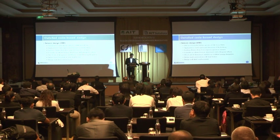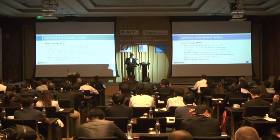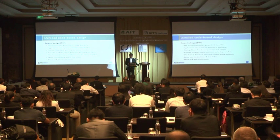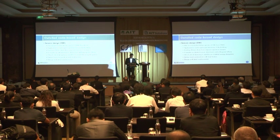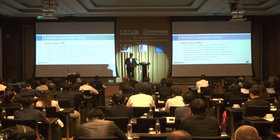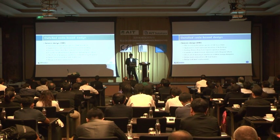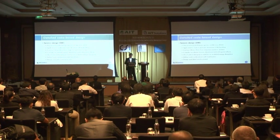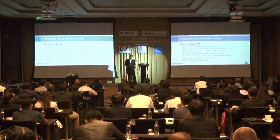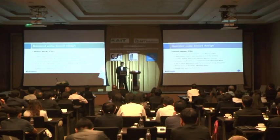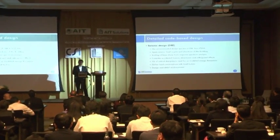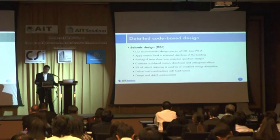We have to check accidental torsion of the building, and if needed, amplify the torsional effects. If there is no amplification, at least we have to consider 5% eccentricity for the torsional effects. Then we have to consider the directional and orthogonal effects in the design load combination — normally 100% in one direction and 30% in the other direction.